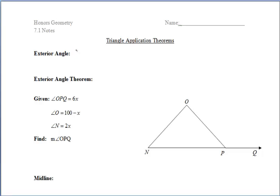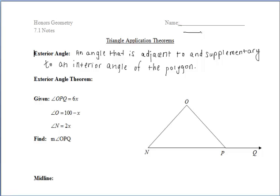Let's first talk about the exterior angle. We've talked about this before when we've discussed the exterior angle inequality. An exterior angle is an angle that is both adjacent to and supplementary to an interior angle of the polygon. So if I were to draw a triangle and extend one of the sides to create an exterior angle — highlighted in red here — please note that it is adjacent to and supplementary to that interior angle.